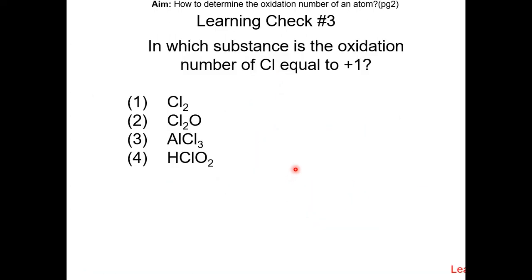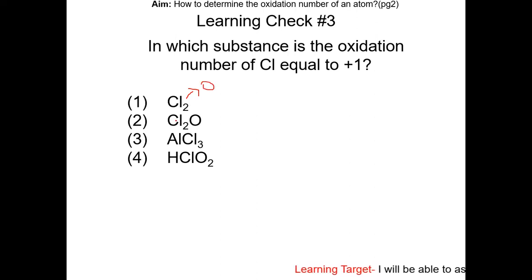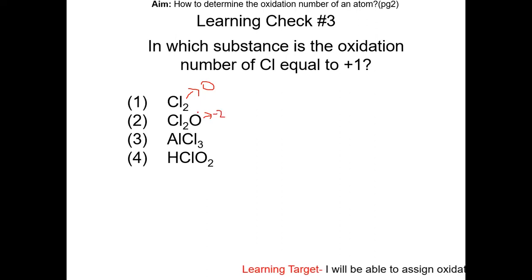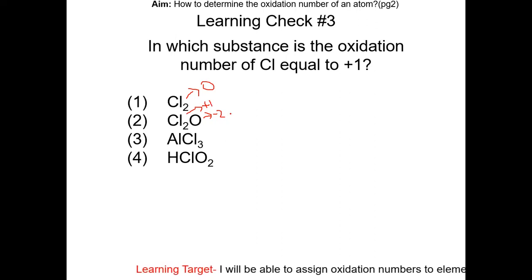Learning check number three: in which substance is the oxidation number of chlorine equal to positive one? Cl2 consists of only one element, so Cl has an oxidation number of zero. For Cl2O, oxygen has an oxidation number of −2. So Cl must have an oxidation number of +1 so that the sum of oxidation numbers equals zero. The answer is choice two.